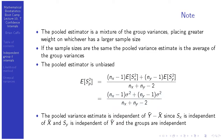The pooled variance estimate turns out to be independent of y-bar minus x-bar. The reason is that x-bar is independent of sx and y-bar is independent of sy, so x-bar minus y-bar is independent of sx and sy, and therefore independent of any function of sx and sy — which s_p squared is. Take it as given that y-bar minus x-bar is independent of the pooled variance estimate.